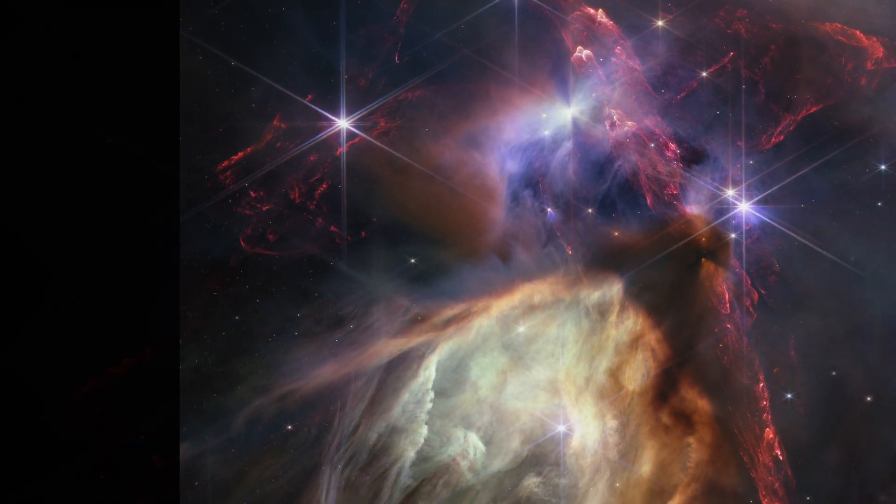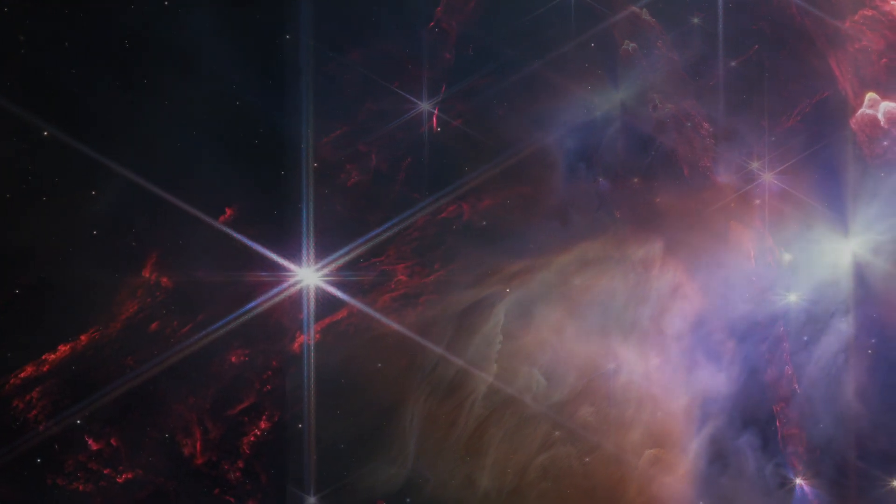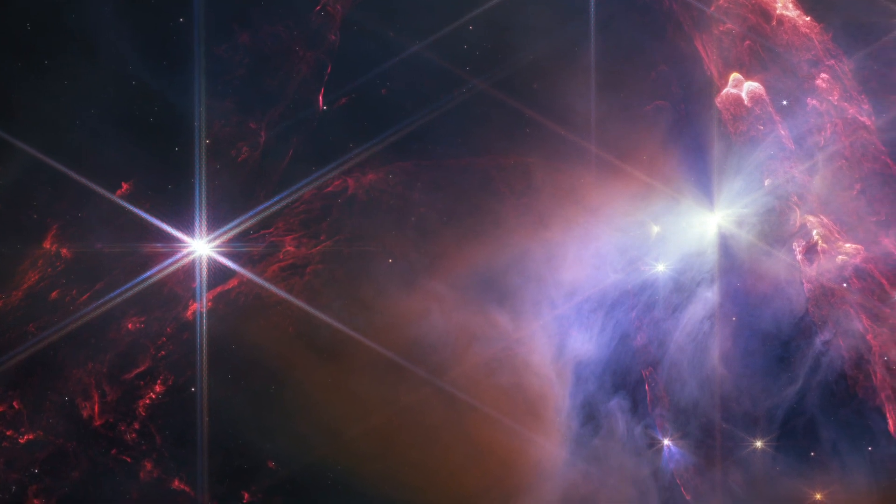A chaotic scene resembling explosions frozen in time, this new image from NASA's James Webb Space Telescope displays a field of about 50 young stars, many of them similar in mass to our Sun.